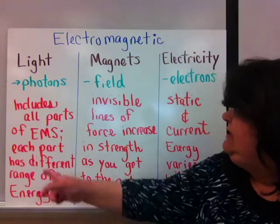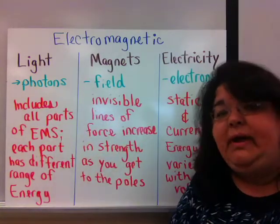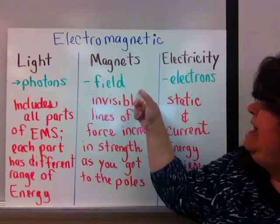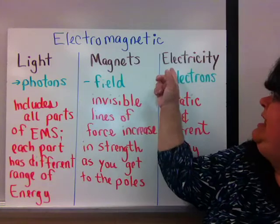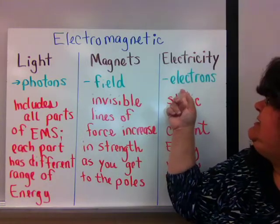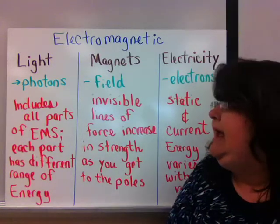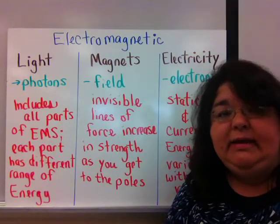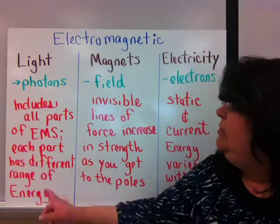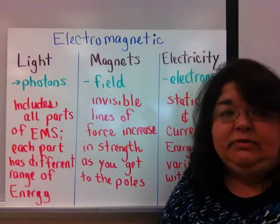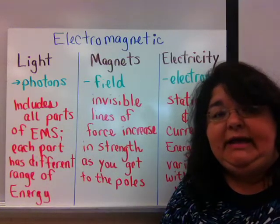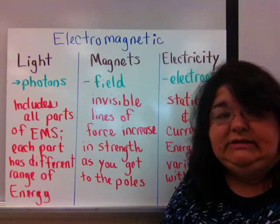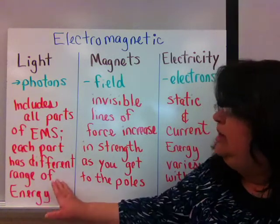Light travels as photons or as a wave. Magnets have a magnetic field, and electricity travels as electrons. When we're talking about the electromagnetic energy of light, we're including all parts of the electromagnetic spectrum, not just the visible light that we are using to see with, but all of them.